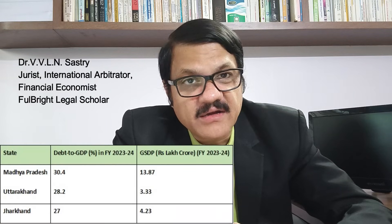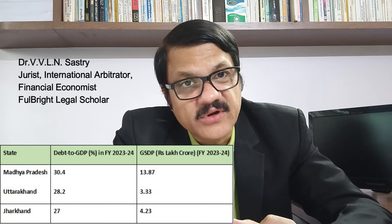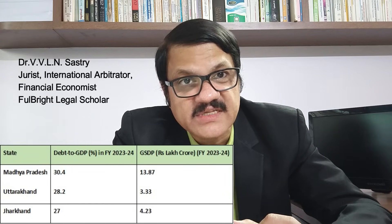The states with median debt, which have a debt to GDP ratio of less than 30% and above 25%, are Madhya Pradesh with 30.4%, Uttarakhand with 28.2%, and Jharkhand with 27%. These three states fall in between the high debt states and the manageable low debt states.